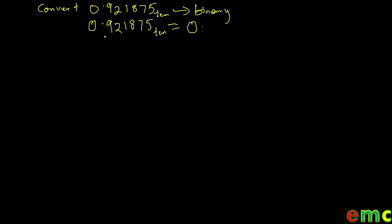Now to convert the fractional part, what we do is multiply the decimal part continuously by the new base we are converting to. Since we are converting to base 2, we multiply our 0.921875 continuously by 2. If you do that on your calculator, you get 1.875.